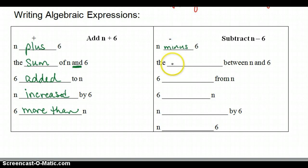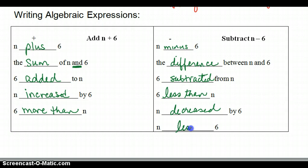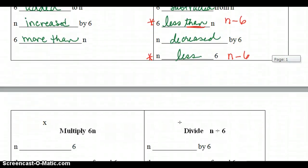To subtract, N minus 6, the difference between N and 6. 6 subtracted from N, 6 less than N, N decreased by 6, and N less 6. Now, real quick, let's remember what we know about the word than. When you hear the word than, whatever comes after than goes first. So, you write 6 less than N like this, but N less 6 is written the same way. So, be careful. Always listen for the word than, and remember that that means to flip-flop them.